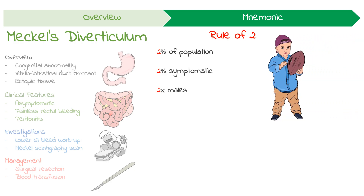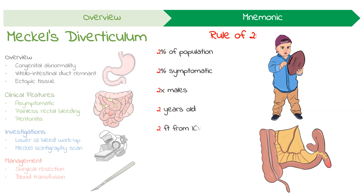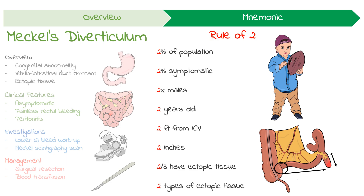In those that are symptomatic, it typically presents before two years old. It is located two feet from the ileocecal valve. It is usually two inches long. Two thirds of people have ectopic mucosa. Finally, there are two main types of ectopic tissue commonly present, which are gastric and pancreatic mucosa.